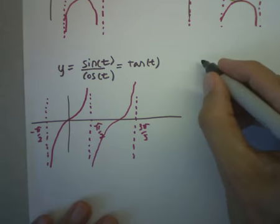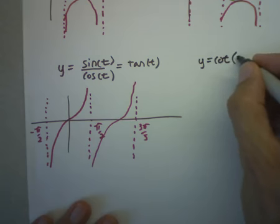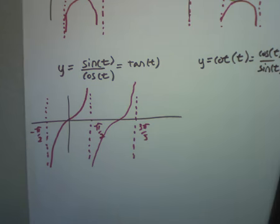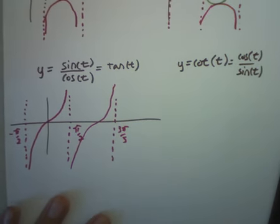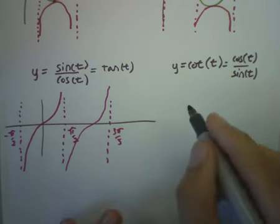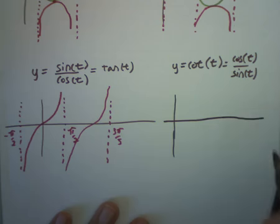And cotangent, same sort of an idea. Write cotangent first. Cotangent is cosine over sine.